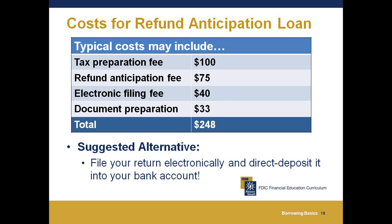Typical costs affiliated with a refund anticipation loan include a tax preparation fee of $100, a refund anticipation fee of $75, an electronic filing fee of $40, and document preparation of $33, totaling $248. When you e-file your tax return and request direct deposit, your refund is often deposited in your bank account within two weeks — sometimes just as fast as a refund anticipation loan, yet costing substantially less. Many organizations host Volunteer Income Tax Assistance (VITA) sites, an IRS-coordinated program providing free income tax assistance and e-filing. Contact the IRS for a location near you.